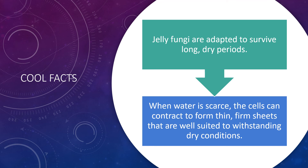Some jelly fungi can be eaten raw. Poisonous jelly fungi are rare; however, many species have an unpalatable texture or taste. Some species, like Tremella fuciformis, are not only edible but are prized for their use in soup and vegetable dishes.